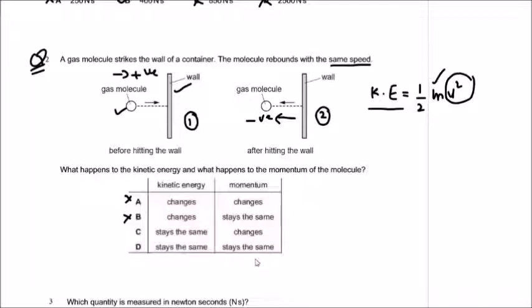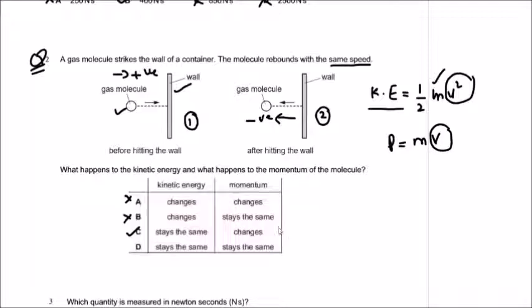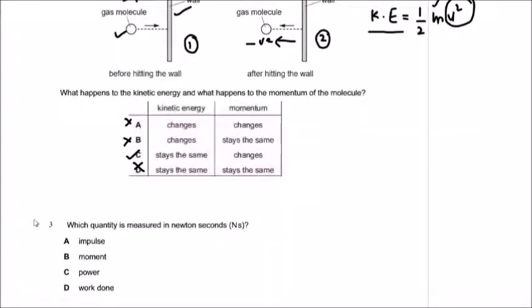Now check momentum. Momentum is the product of mass and velocity. Velocity is a vector — it depends on direction. Since the direction changes between case one and case two, there is a change in momentum. Option C shows kinetic energy the same and momentum changed — both correct. Option D says momentum stays the same, which is not correct. So C is the correct option.